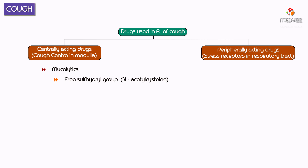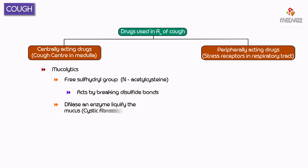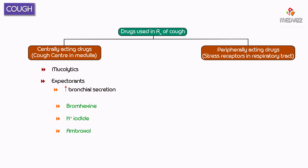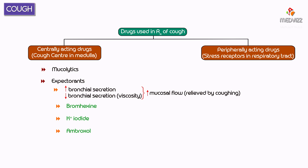Mucolytics contain a free sulfhydryl group, like N-acetylcysteine, which acts by breaking the disulfide bond. DNase is an enzyme that liquefies mucus and is used in cystic fibrosis. For wet cough, expectorants like bromhexine, potassium iodide, and ambroxol are used. Expectorants increase bronchial secretion and decrease the viscosity of bronchial secretion, leading to increased mucosal flow that can be removed more easily through coughing.